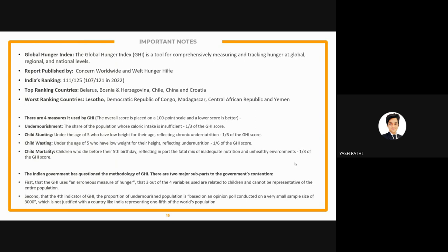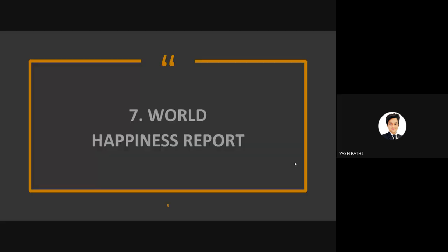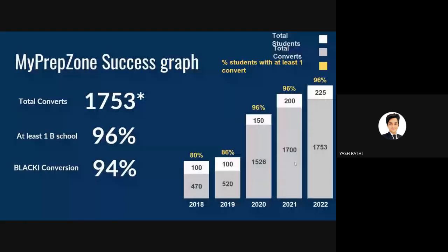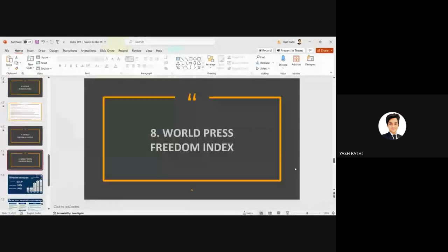Another limitation of the GHI is that the undernourishment indicator — the only non-child metric — is based on an opinion poll conducted on just 3,000 people, which is an extremely small sample size for a country like India representing one-fifth of the world's population. Despite these limitations, the GHI still gives a useful overall picture of hunger levels. Two additional indices worth studying independently are the World Happiness Report (top country: Finland) and the World Press Freedom Index.